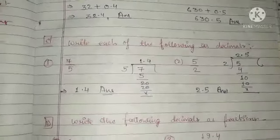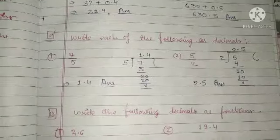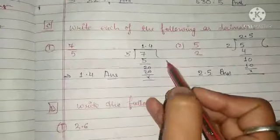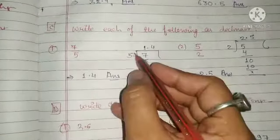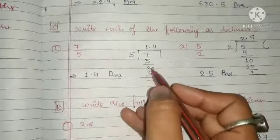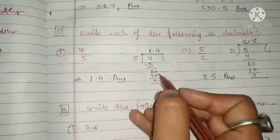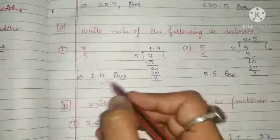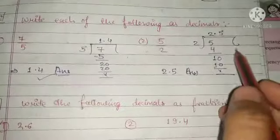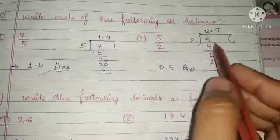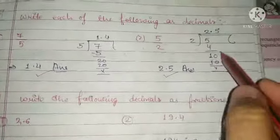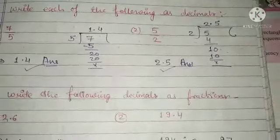Next question: write each of the following as decimals. First is 7 upon 5. We perform long division — 5 goes into 7 once with remainder 2; adding a decimal point and zero gives 20, so the answer is 1.4. Second is 5 upon 2: dividing 5 by 2 gives 2.5.